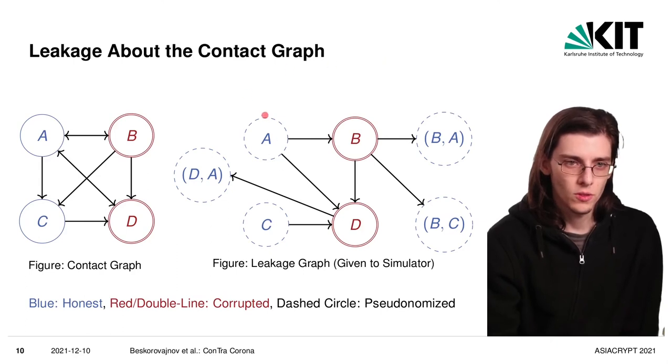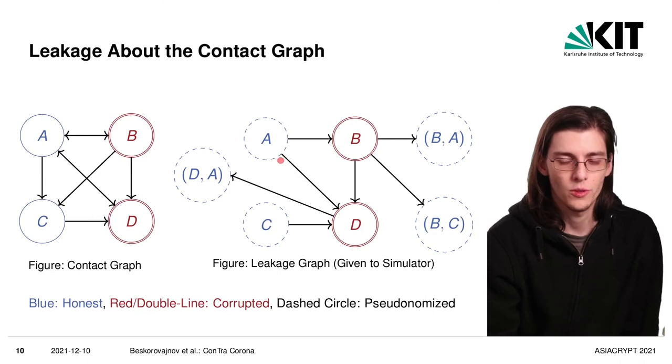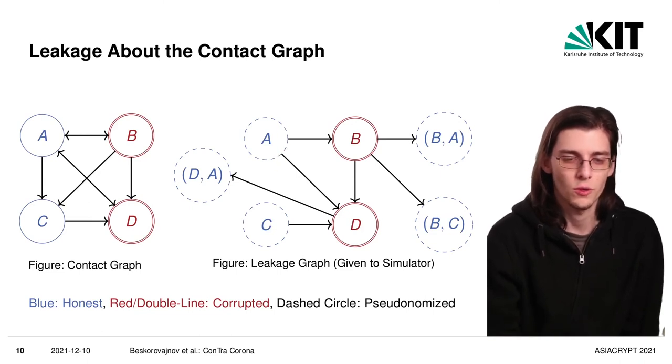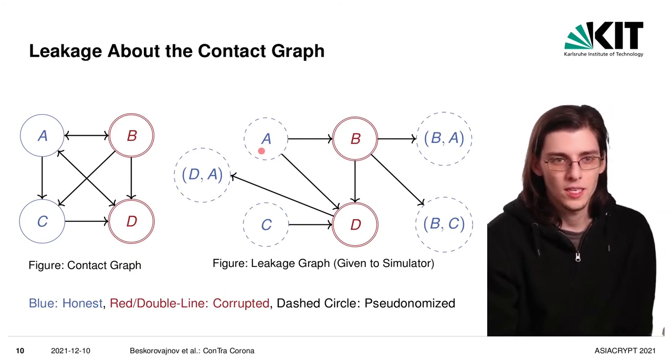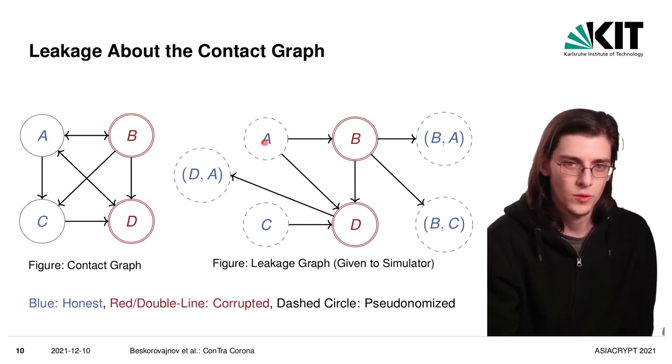Edges from honest nodes are also copied over, but as shown here in the right graph, the lines of these nodes are dashed lines, which should indicate that the adversary does not get the full identity of those nodes, but only a pseudonym that's switched every short-term epoch. So the environment can set a new contact graph every short-term epoch, and the pseudonym for A is chosen fresh every time. So the adversary cannot see which node from the previous contact graph this represents.